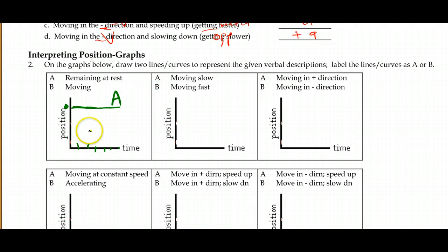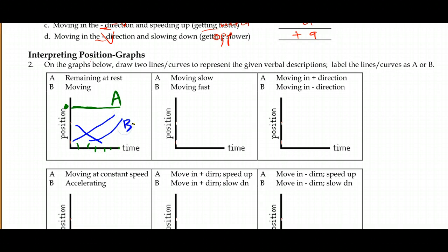If we're moving, we need anything that's not flat. It could be an upward trend, a downward trend, or a curving trend — any of those indicate the object is moving. For example, this line is actually moving down toward zero, assuming zero is our reference point.